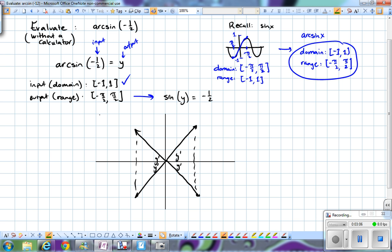What I want to do is notice that the output or the range is only allowed to go from negative 90 degrees to 90 degrees if I change these corresponding pi over 2s to degrees.